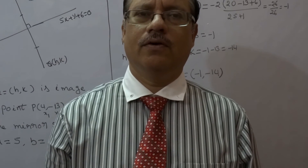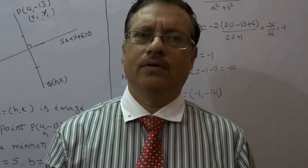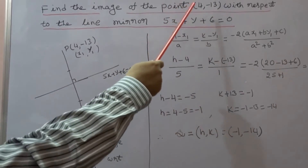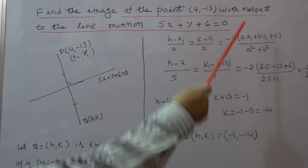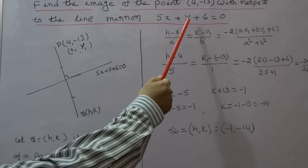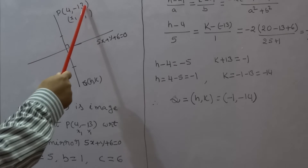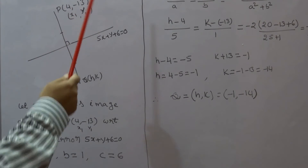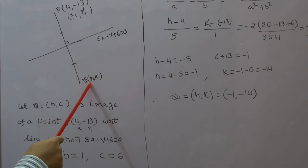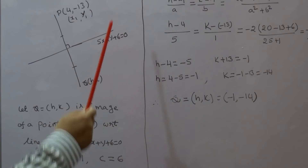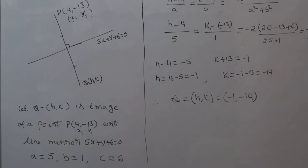Now we will see one example based on the image theorem. Find the image of the point (4, -13) with respect to the line mirror 5x + y + 6 = 0. The given point is (4, -13), say it is (x1, y1), and Q is the image of P with respect to the line mirror 5x + y + 6 = 0. Here a = 5, b = 1, and c = 6.